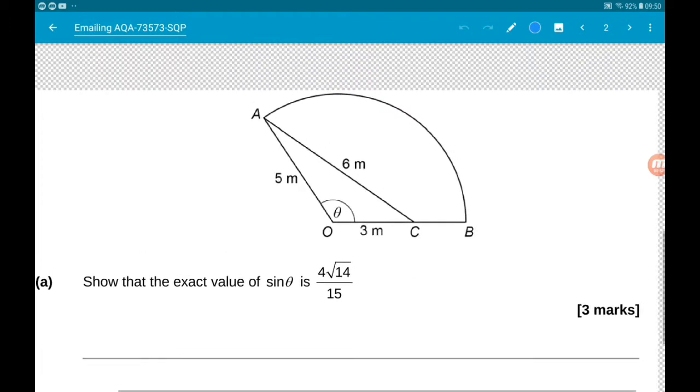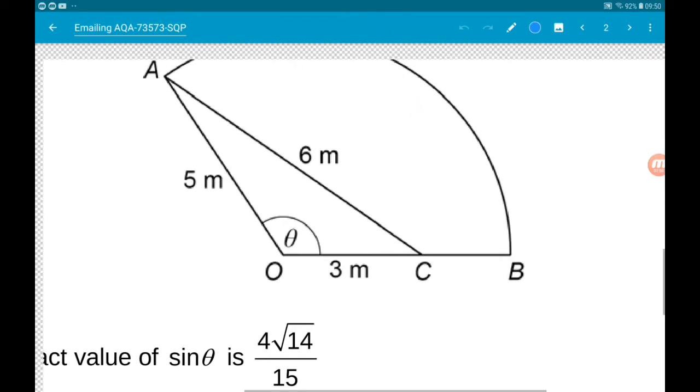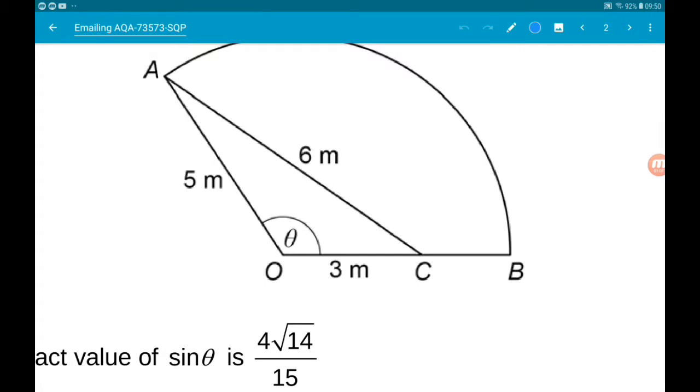Okay, so we're looking at this triangle. Now it's a non-right angle triangle, so we're thinking either sine rule or cosine rule. Now we know all three side lengths, so we're going to use the cosine rule.